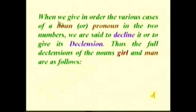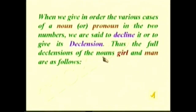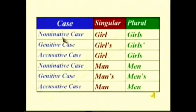Now, declension of nouns. When we give in order the various cases of a noun or pronoun in the two numbers — singular and plural — we are said to decline it or to give its declension. The full declension of the noun 'girl': nominative case — girl, girls; genitive or possessive case — girl's, girls'; accusative case — girl, girls.